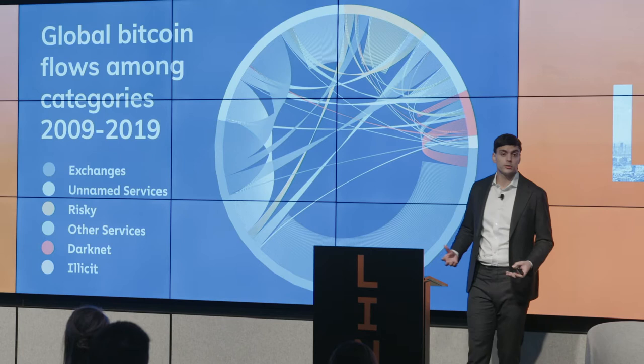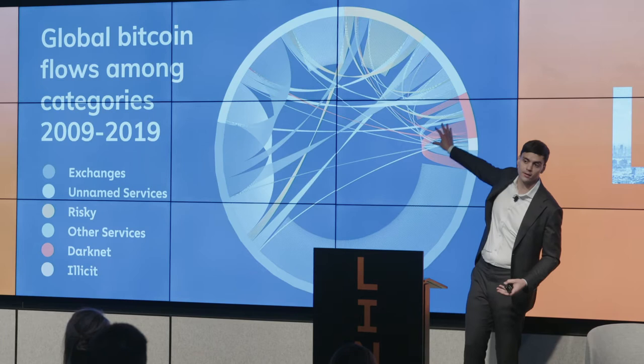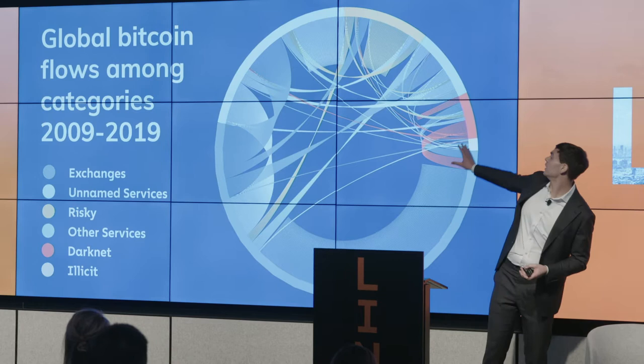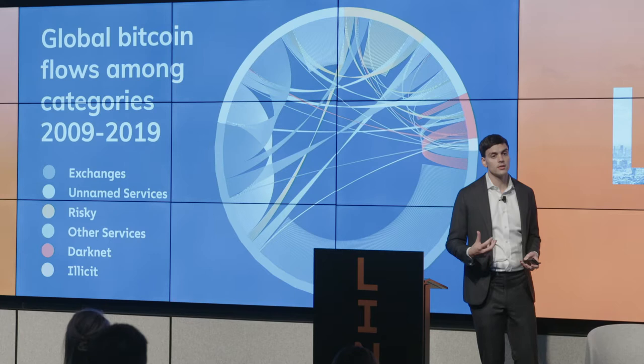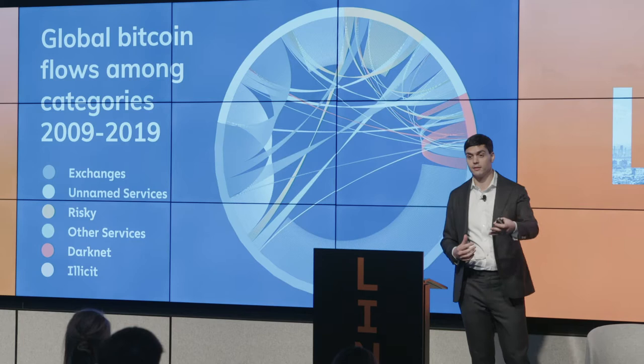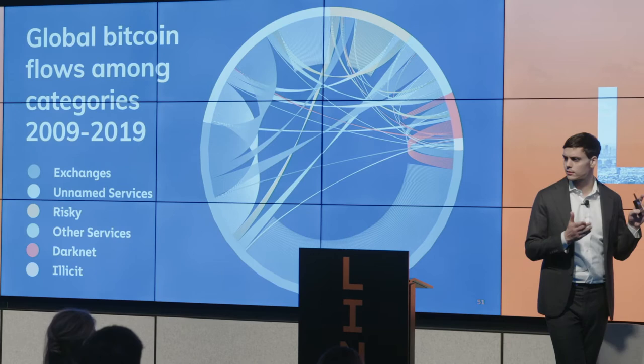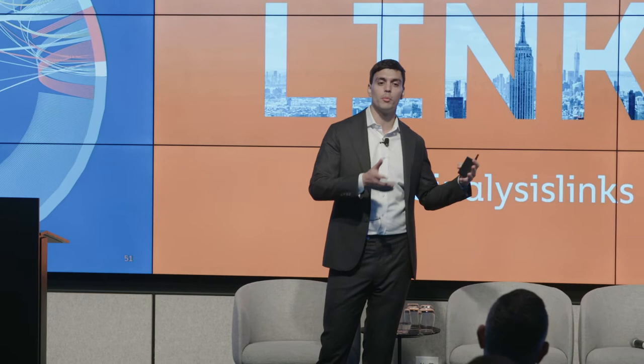We can also see why Chainalysis is important. We've got the red and the pink — that is darknet markets and illicit activity. We can see the red flowing into the blue, so that's darknet markets sending to exchanges, and the blue going back to the red, where exchanges are sending funds into the darknet markets. For those of you who think that's a pretty big slice of this circle, remember this is in Bitcoin terms. If this was in dollar terms it would be much smaller — much of that activity was earlier in Bitcoin's history when prices were lower. In dollar terms in 2019, it would be about 1% of this circle.